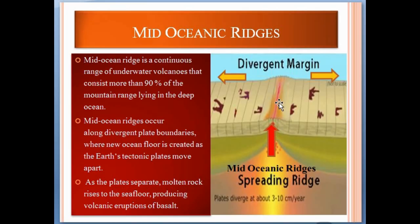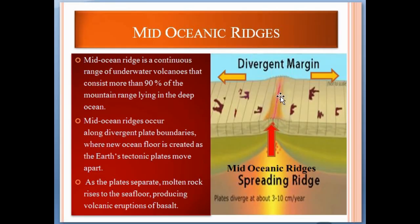As you can see in this picture, this is the divergent plate margin where two plates are moving apart. This is the mantle area from where the magma is erupting towards the seafloor. When volcanic material is accumulated there, the mid-oceanic ridge is formed.